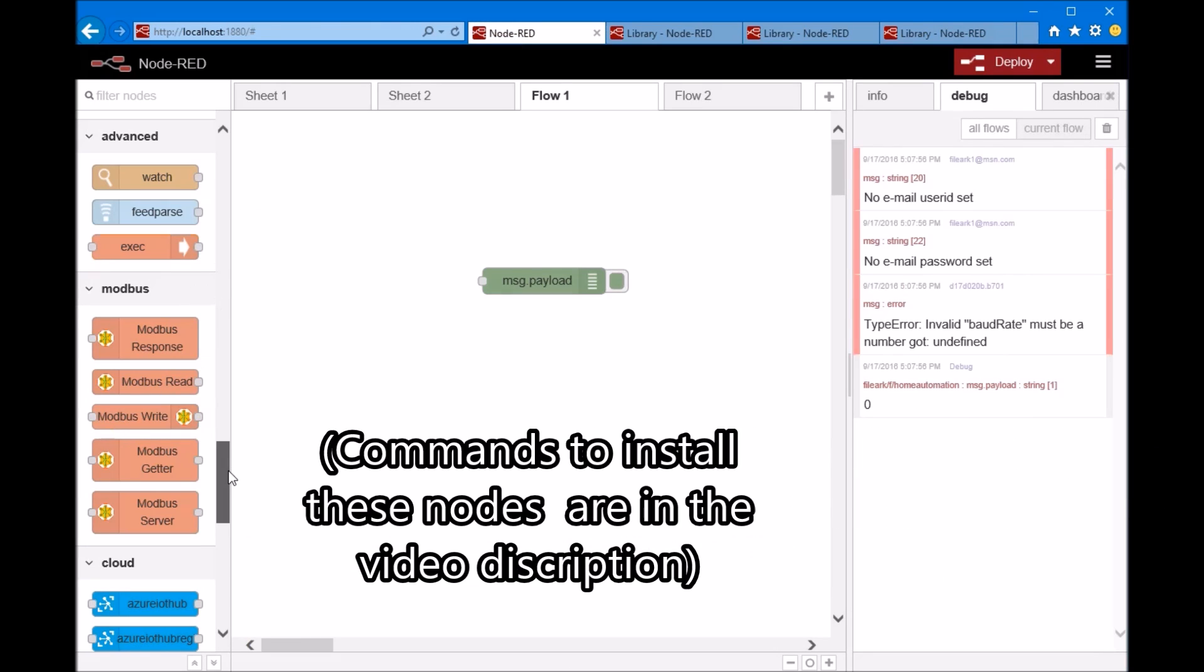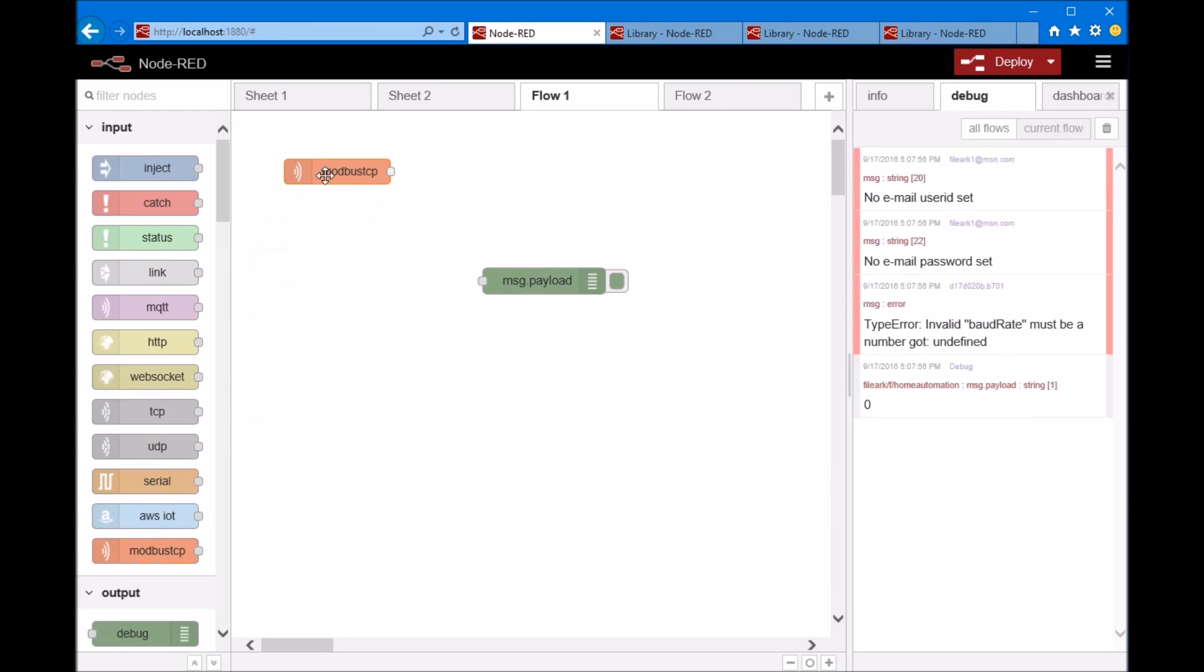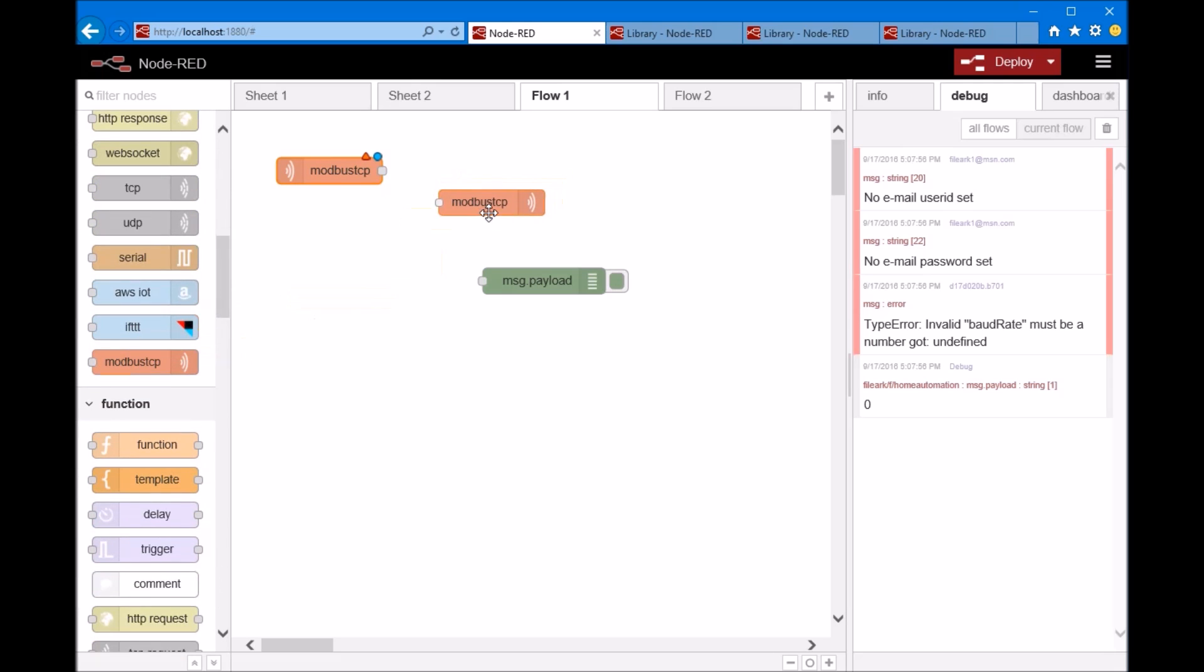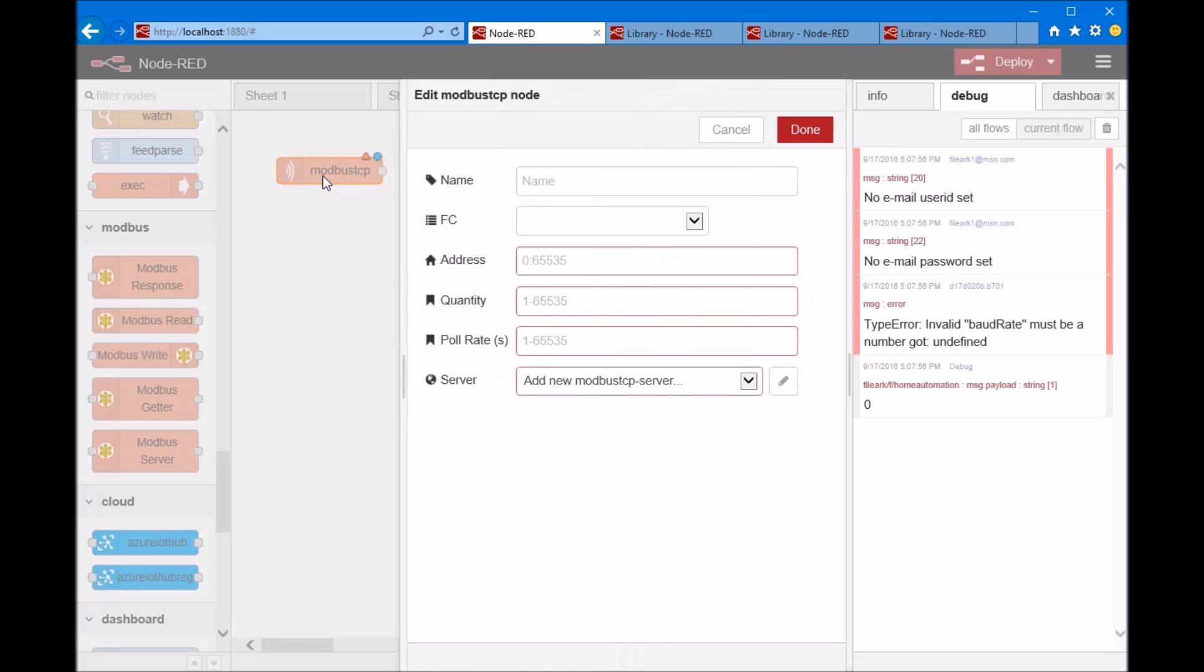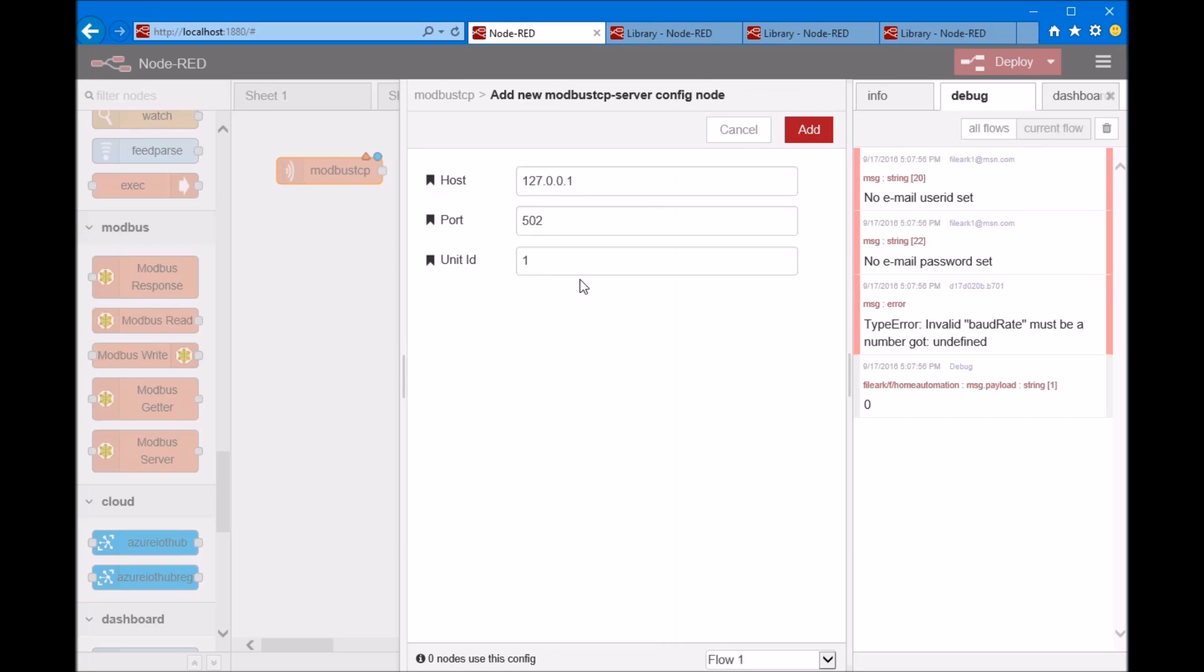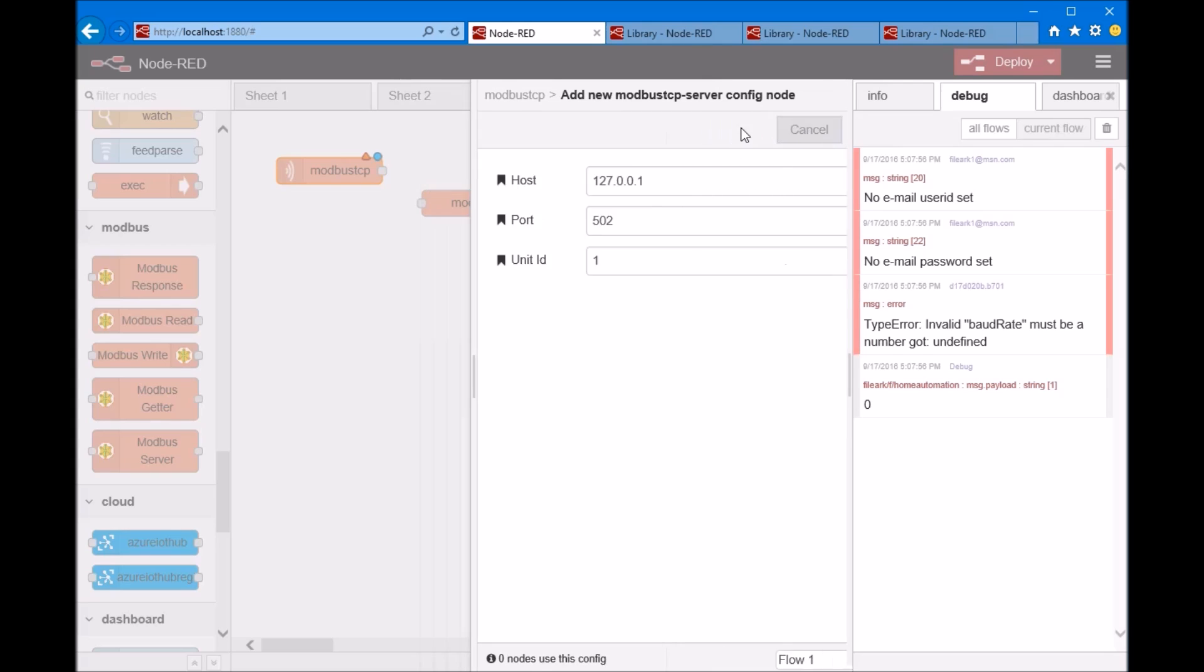So once you have these installed, you'll see Modbus TCP in and out. Looking at Modbus TCP, it's pretty straightforward. You go ahead and pick your Modbus command, put in your address, poll rate, and then you can go ahead and add a server, IP address, and port. So that's pretty straightforward right there.